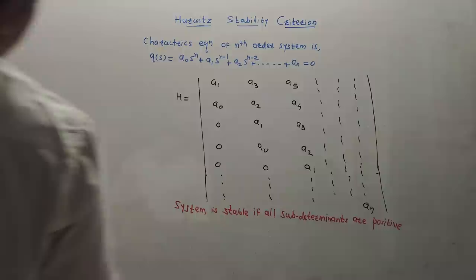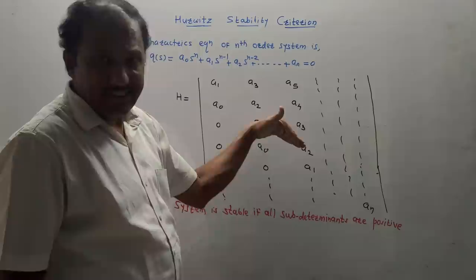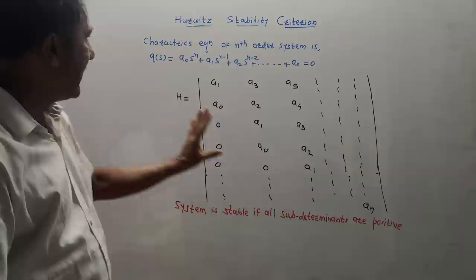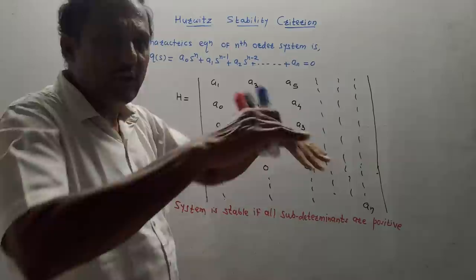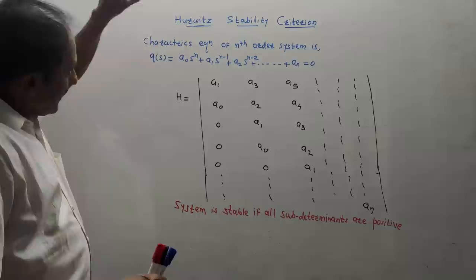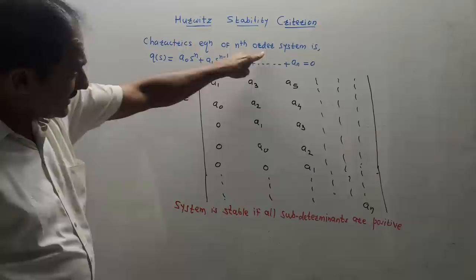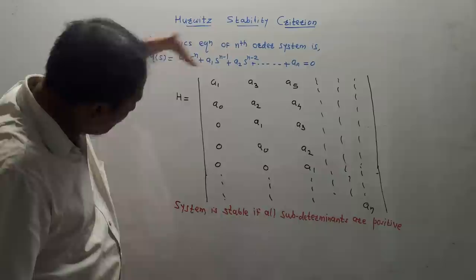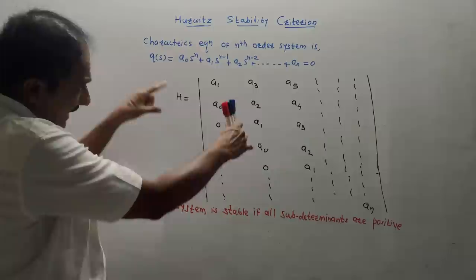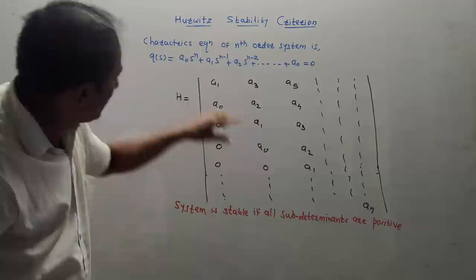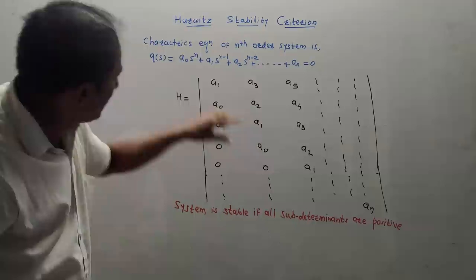Hurwitz stability criteria — we will be solving numericals related to this. Before that, let me explain the theory. The characteristic equation of an nth-order system has coefficients a0, a1, a2, and so on, with powers of S from n down to zero. From this, a determinant is formed and denoted by H — this is called the Hurwitz determinant. The first row starts with a1, a3, a5; the second row is a0, a2, a4; the third row is 0, a1, a3, a5; and so on, generalizing for the full determinant.